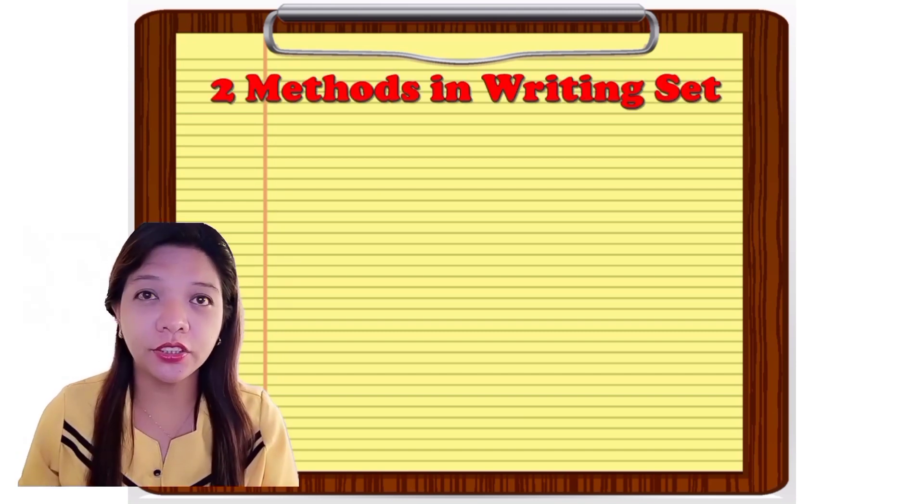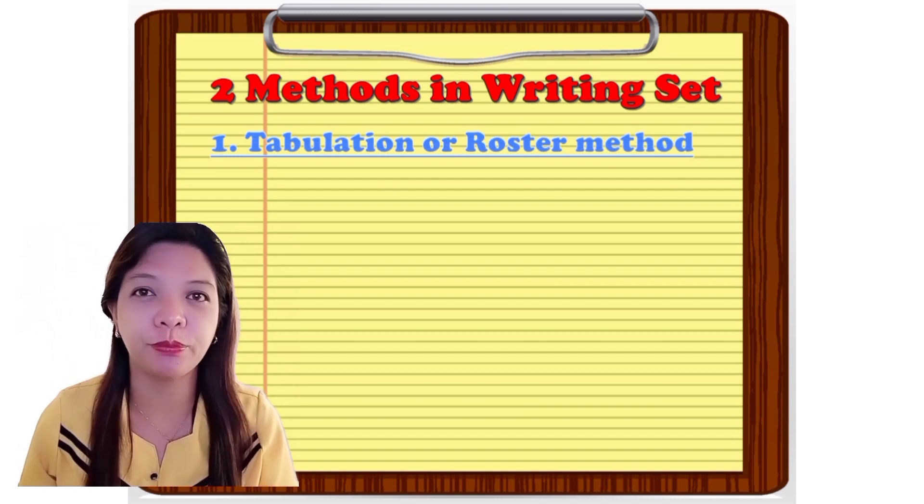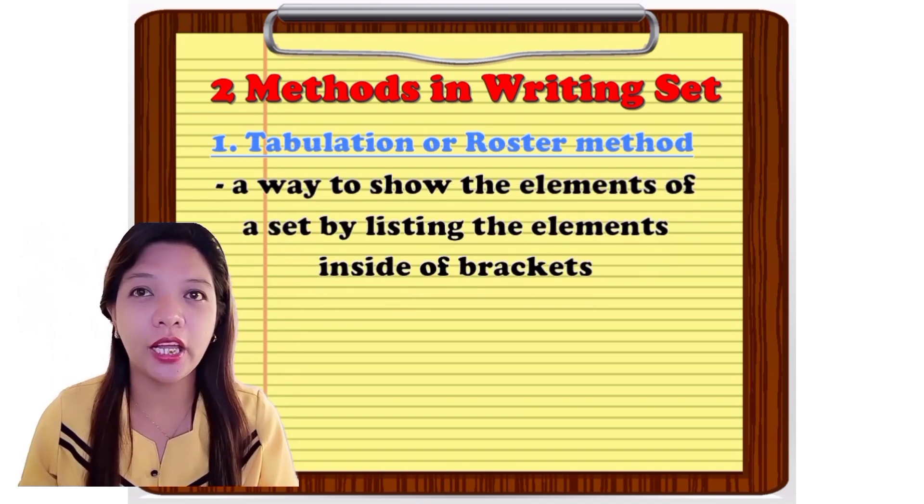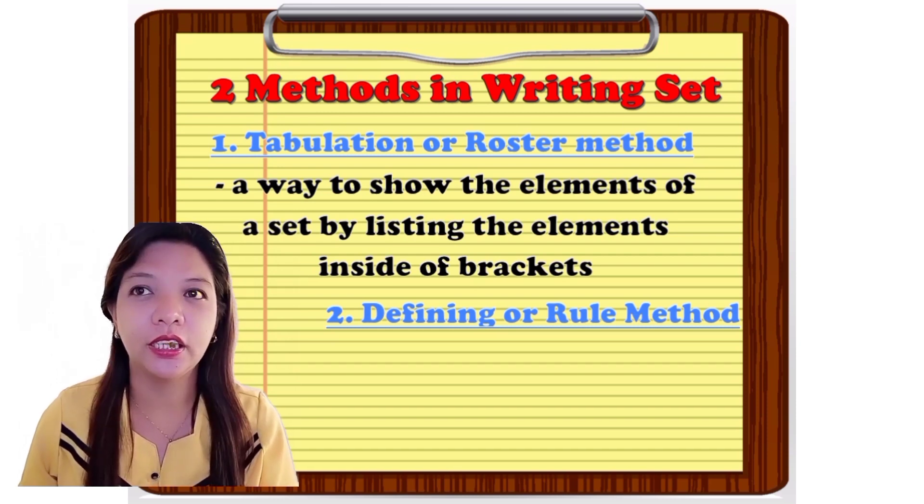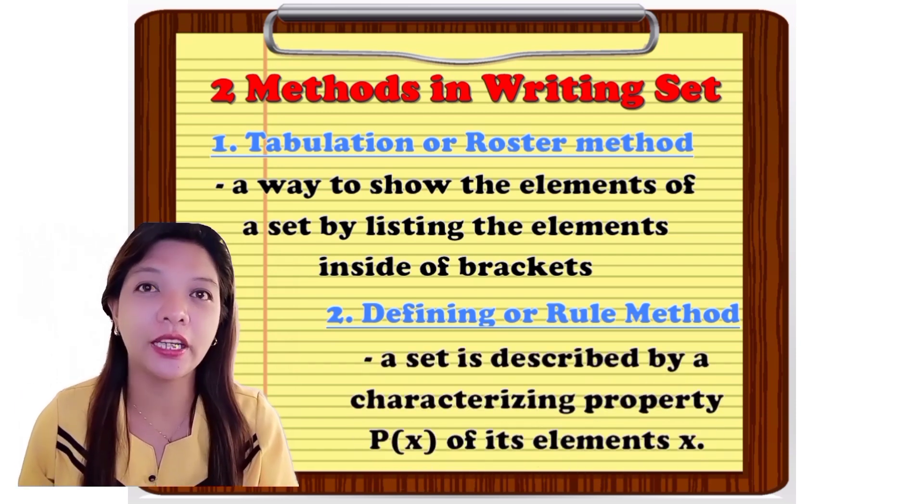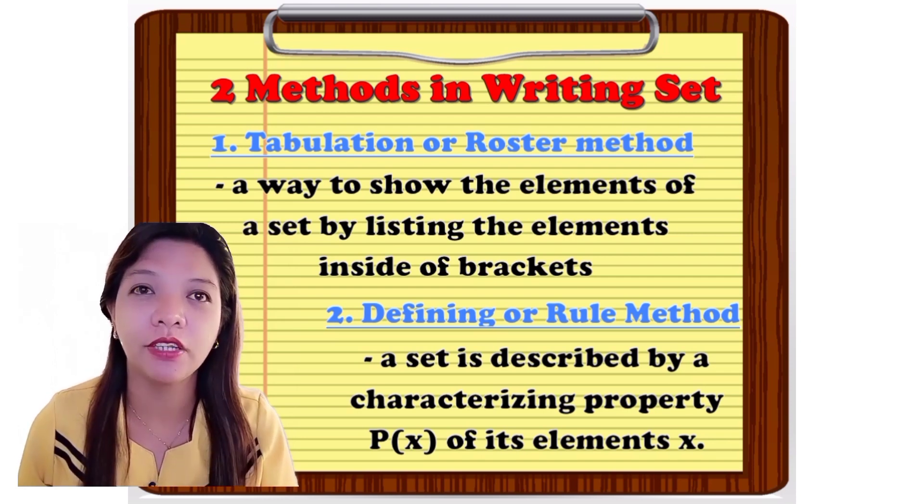There are two methods in writing SET. The first one is the tabulation or the roster method, a way to show the elements of a SET by listing the elements inside the bracket. The second one is the defining or the rule method, a SET is describing by characterizing property, which is the probability of the elements of X.